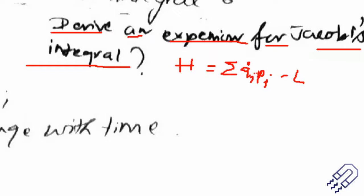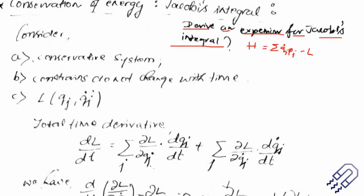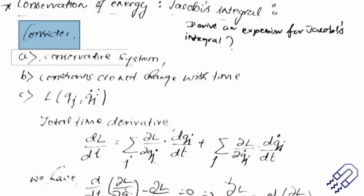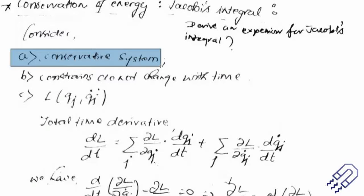Before we do any derivation, we consider certain initial conditions. We consider a conservative system — we already know the conditions of a conservative system. The Lagrangian gets modified as T minus V, and the delta q_j of the potential function gets modified accordingly. Also, constraints do not change with time, which means the Lagrangian is a function of generalized coordinate q_j and generalized velocity q_j dot.